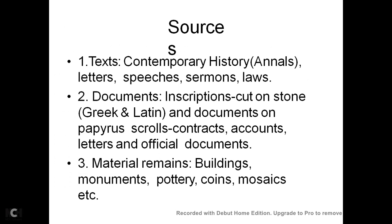In the sources, the first is texts — contemporary history, letters, speeches, sermons, laws — from all these things we got knowledge about this Roman Empire. Then documents: inscriptions cut on stone in both languages, Greek and Latin, and documents on papyrus scrolls, contracts, accounts, and letters and official documents. Through all these documents, we also got knowledge of this Roman Empire.